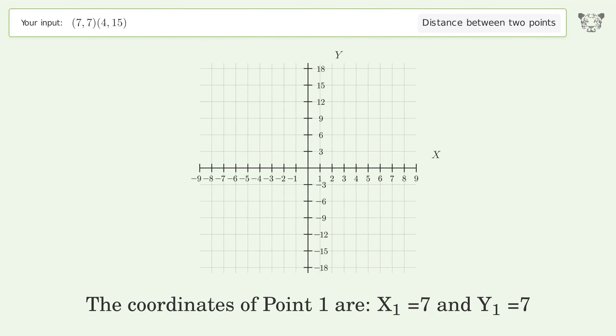The coordinates of point 1 are x1 equals 7 and y1 equals 7. The coordinates of point 2 are x2 equals 4 and y2 equals 15. d is the distance between the two points.